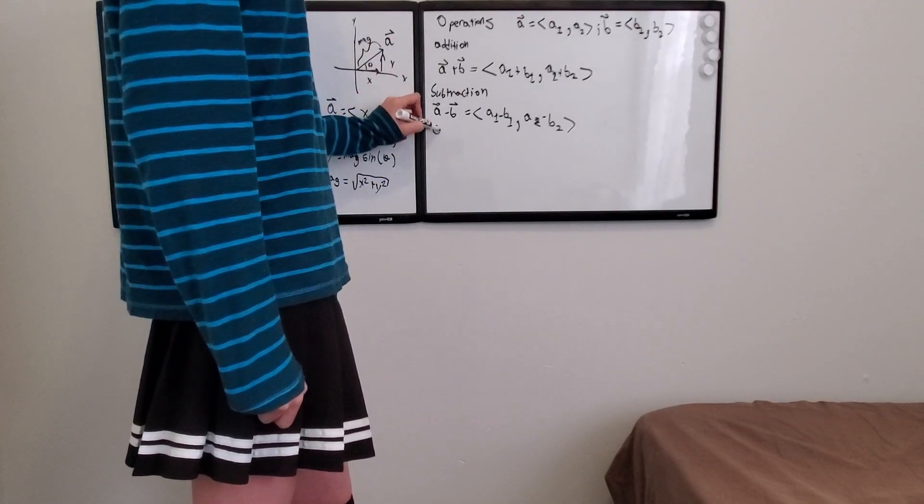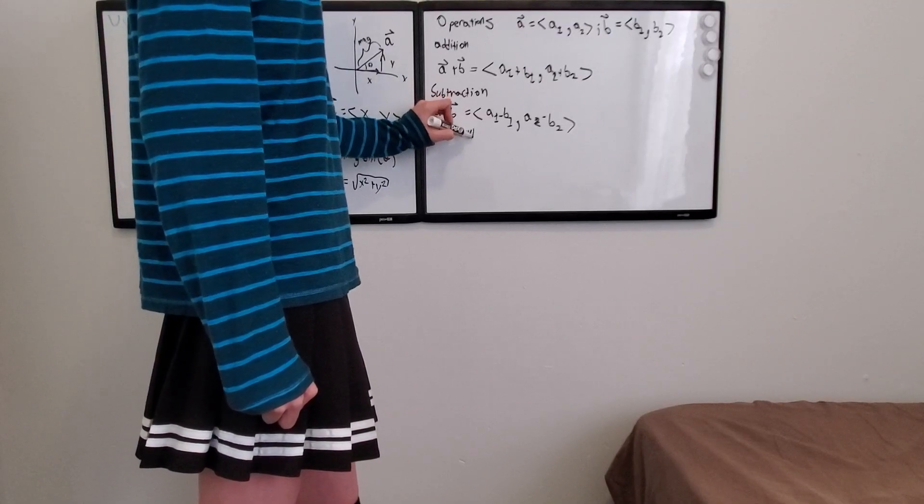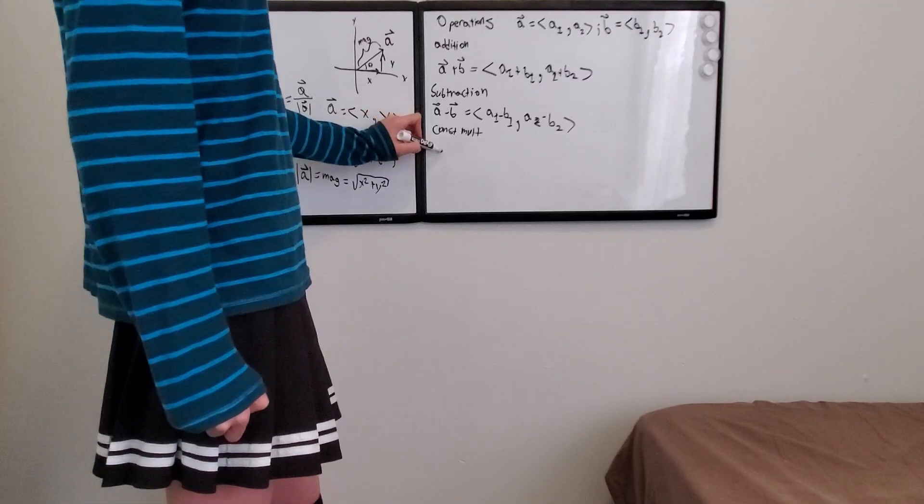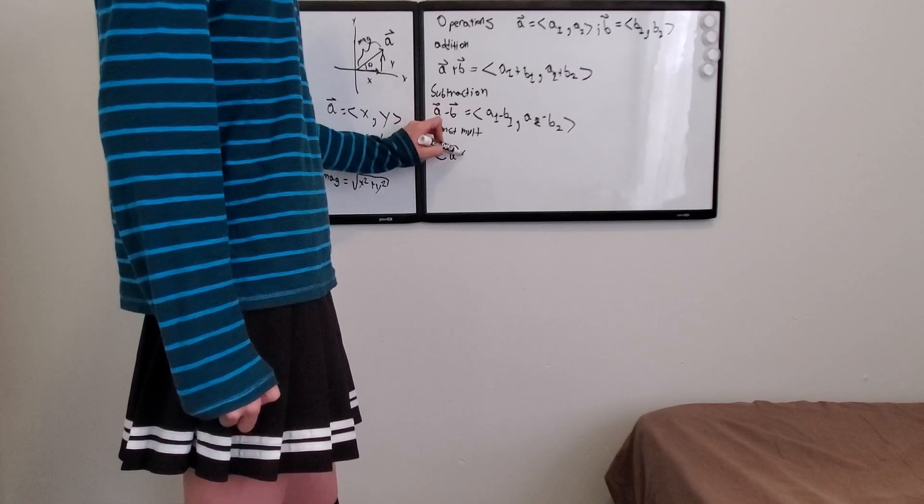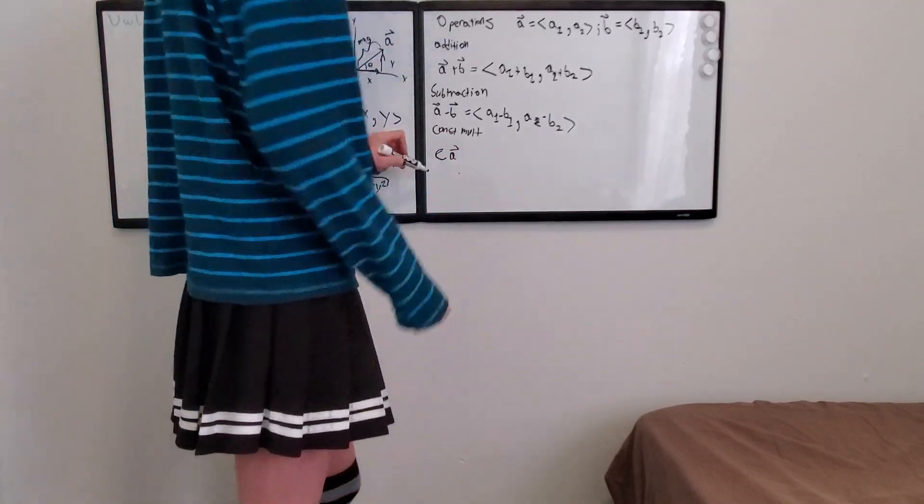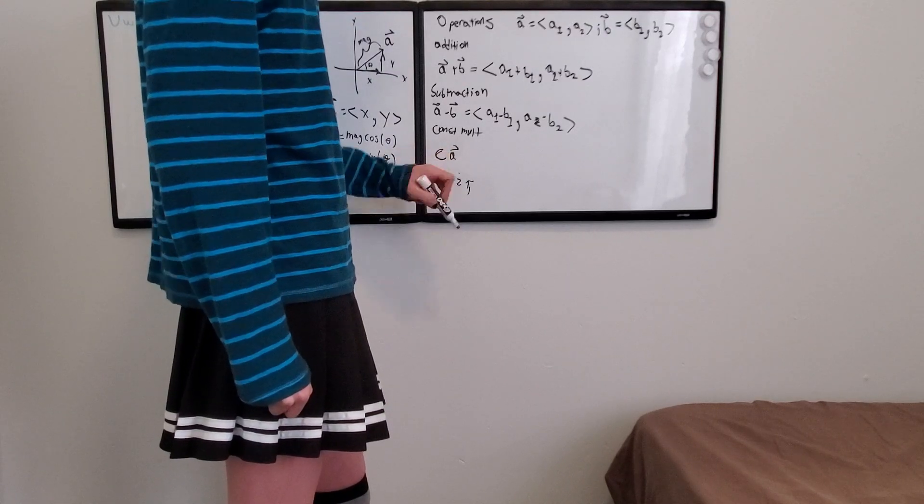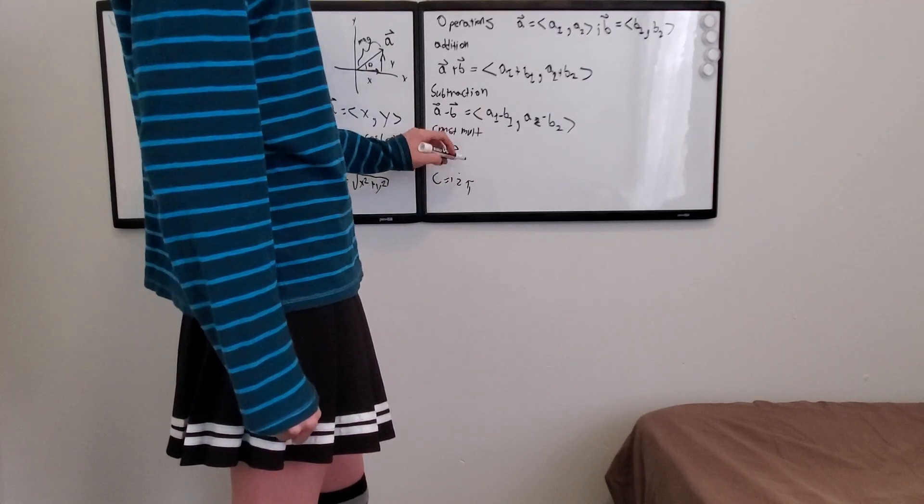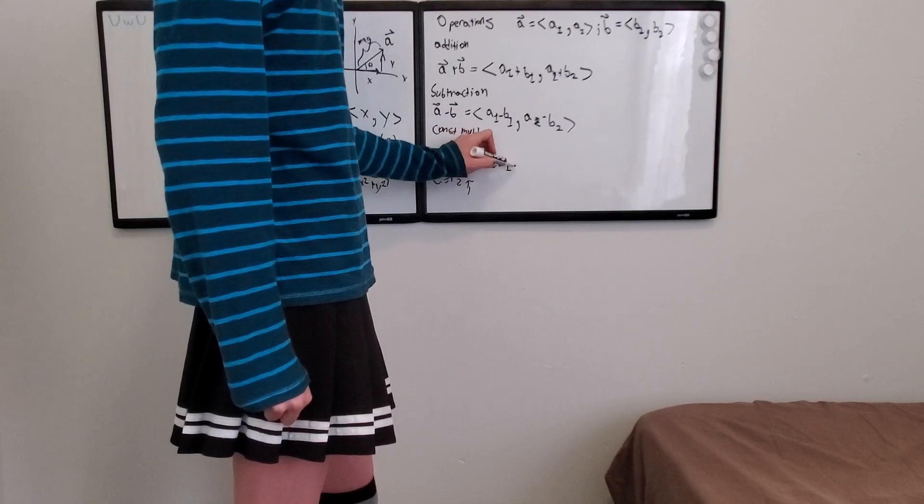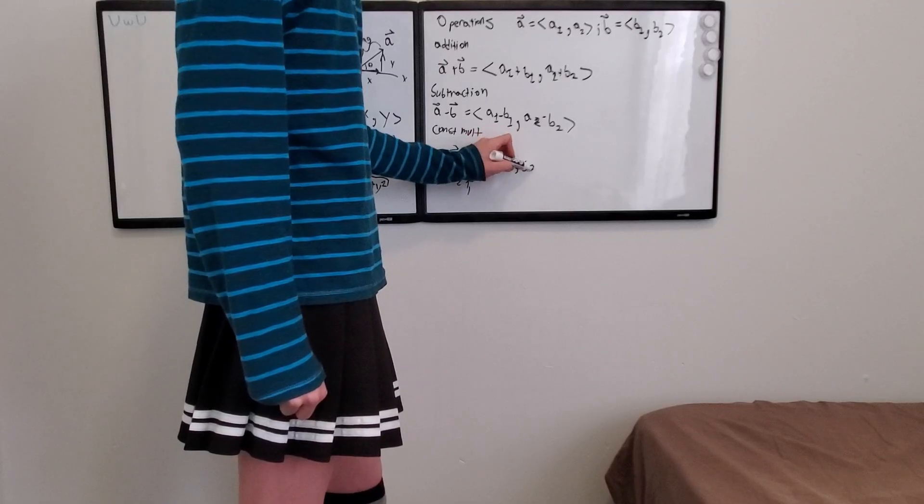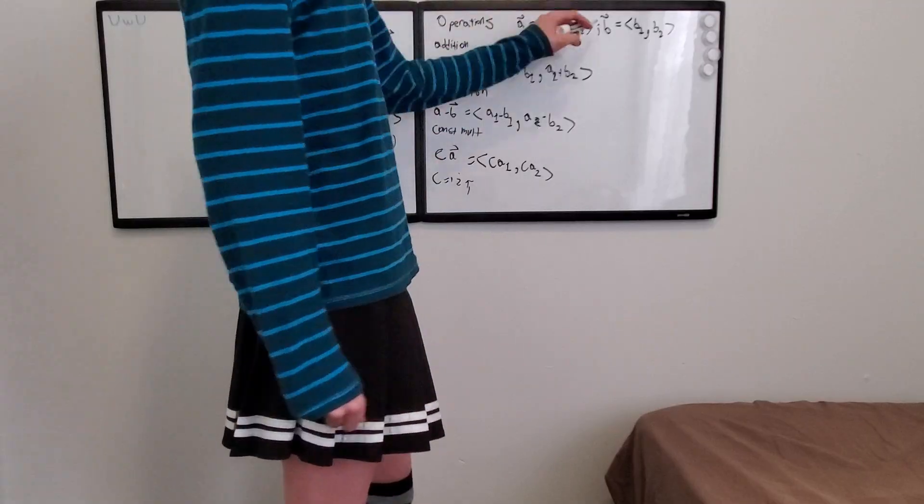You can also do constant multiplication. So if you had some constant C times A, C could be anything, any number I mean. C could be 1, 2, pi, etc. And this will be equal to C A1, comma, C A2. So all you're doing is distributing the C into the vector A. So those are the basics.